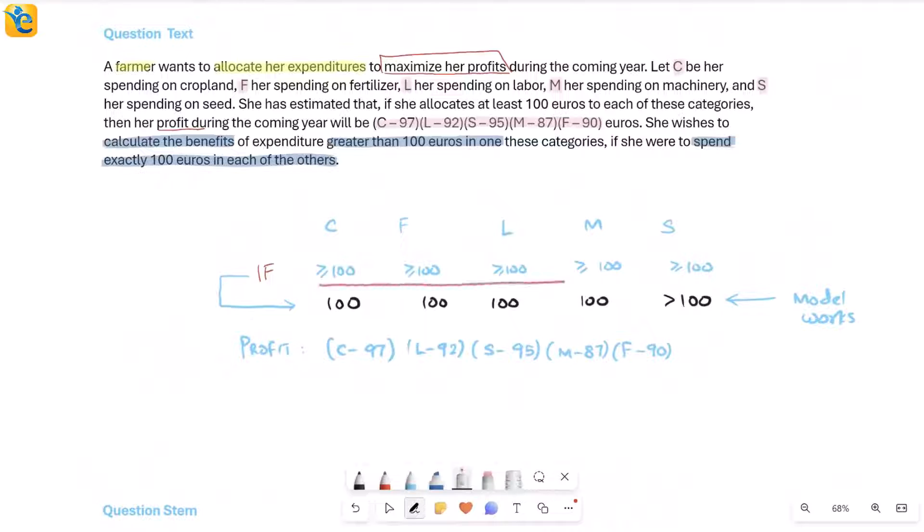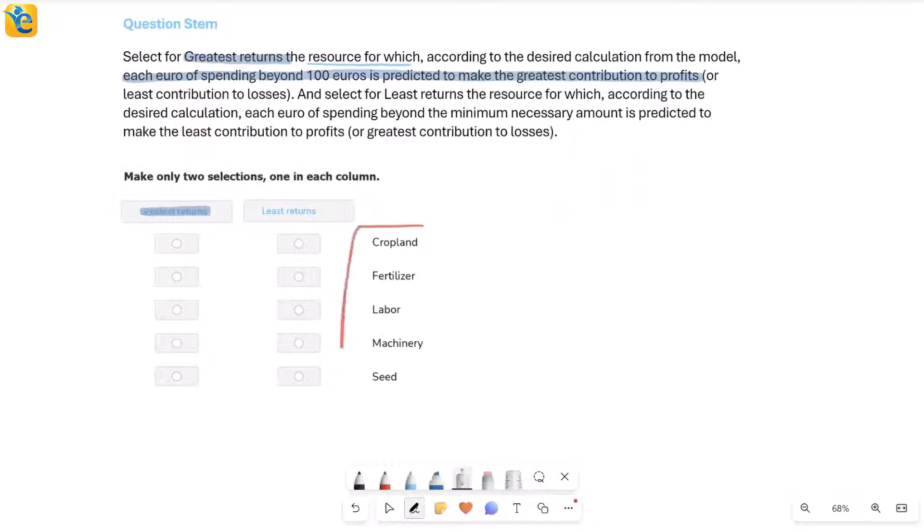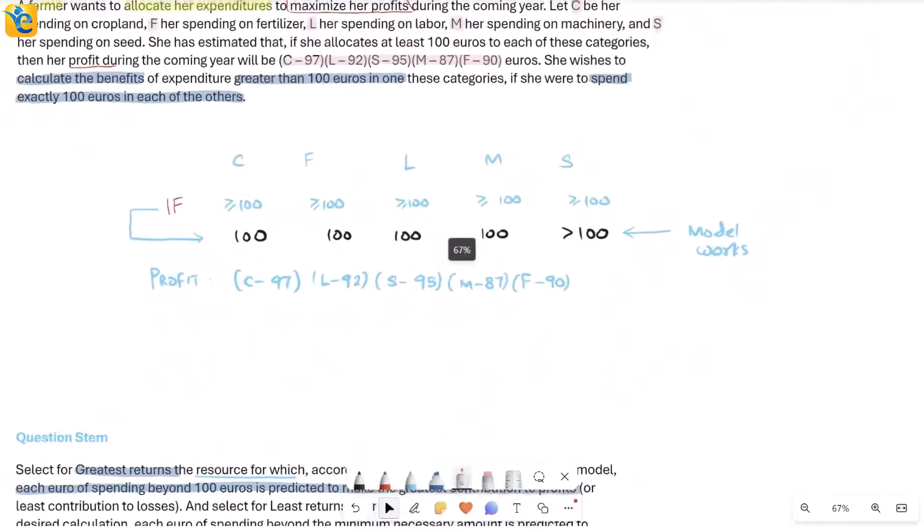Look here: if all of these values are greater than or equal to 100, then notice that the numbers I'm subtracting are always less than 100, which means each of these factors will be positive in my situation. There is no case where a loss will happen; it will be a profit. Even if all were 100, it would still be a profit. If I increase any of them, that factor will increase. So losses are out of the question because of the model we're working with. What do you need to find for greatest returns? You need to see that out of these five categories, where is it that every extra euro she spends above 100 will increase the profit the most?